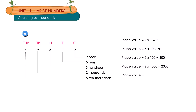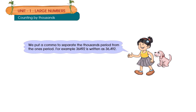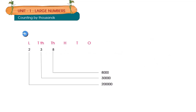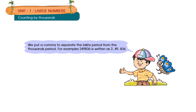Place value: 6 into 10,000 is equal to 60,000. We put a comma to separate the thousands period from the ones period. For example, 36,492 is written as 36,492. We put a comma to separate the lakhs period from the thousands period. For example, 2,49,836 is written as 2,49,836.